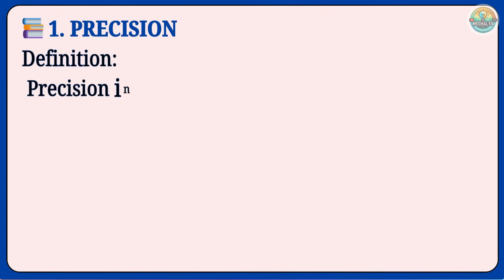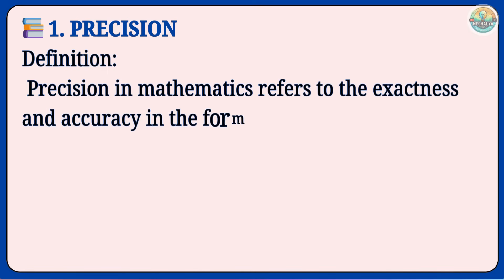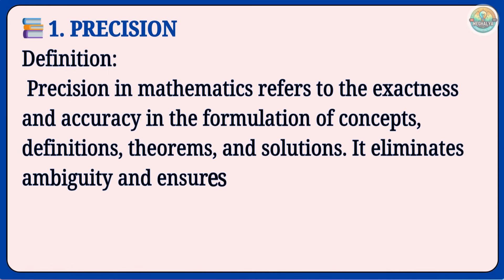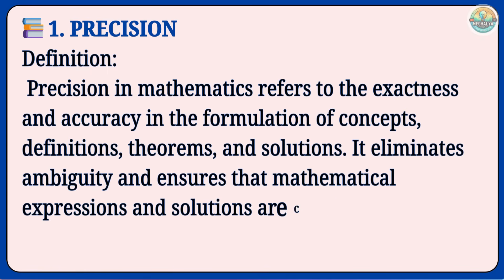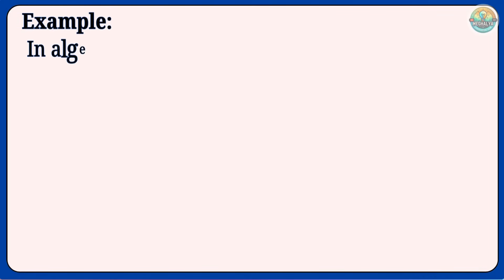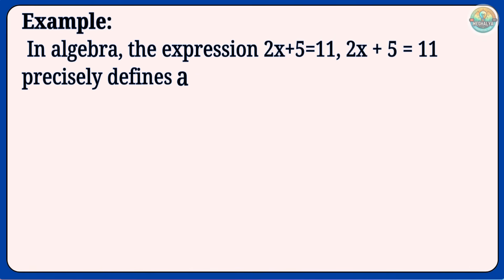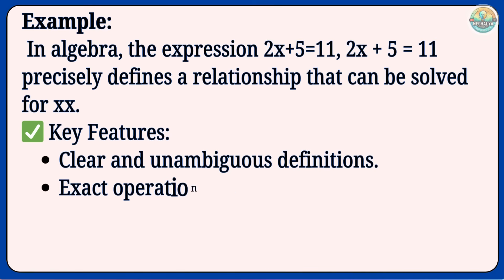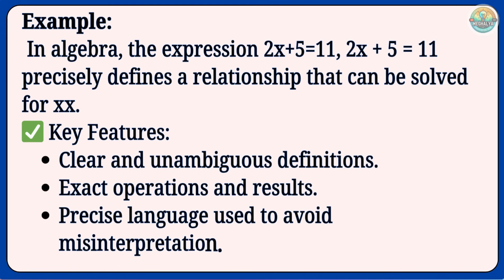1. Precision. Precision in mathematics refers to the exactness and accuracy in the formulation of concepts, definitions, theorems, and solutions. It eliminates ambiguity and ensures that mathematical expressions and solutions are clearly defined and interpreted. Example: In algebra, the expression 2x plus 5 equals 11 precisely defines a relationship that can be solved for x. Key features: Clear and unambiguous definitions; Exact operations and results; Precise language used to avoid misinterpretation.